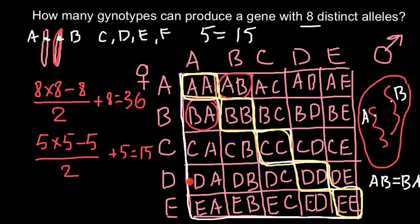As you can see, this formula makes it very easy to calculate the answer for any number of alleles. Even if the question asked about 100 alleles, it would take less than a minute with a calculator. That's all for today — thank you for your attention. Please subscribe for my new videos, which I post almost every day. Thumbs up if you like this video, and write your comments or questions below. See you in the next video, goodbye.